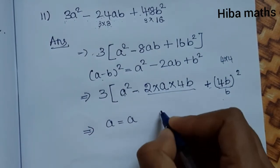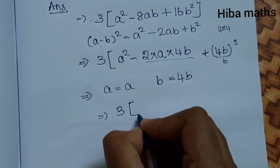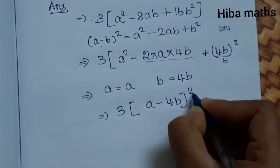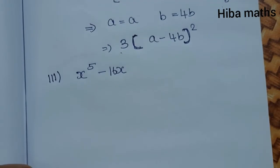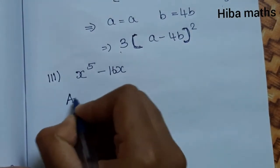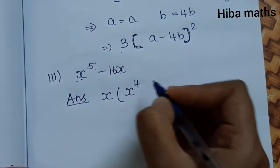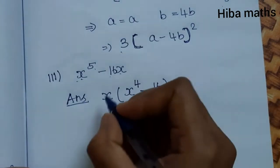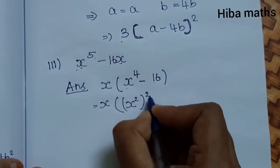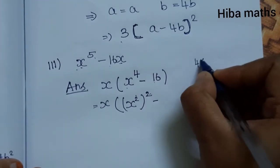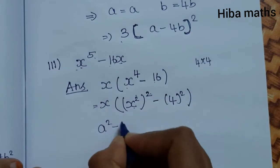Therefore the complete answer to the second question is 3(a - 4b)². We verify: b squared term is 4b, confirming a minus b whole square applies.